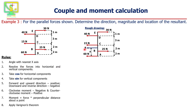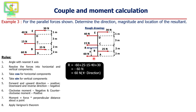Let us consider the resultant is acting in this direction at a distance of x from point A. Resultant R is equal to minus 60 plus 25 minus 15 minus 40 plus 30, which gives minus 60 newtons. This negative sign indicates the direction of the resultant, so our assumption of the resultant is correct.